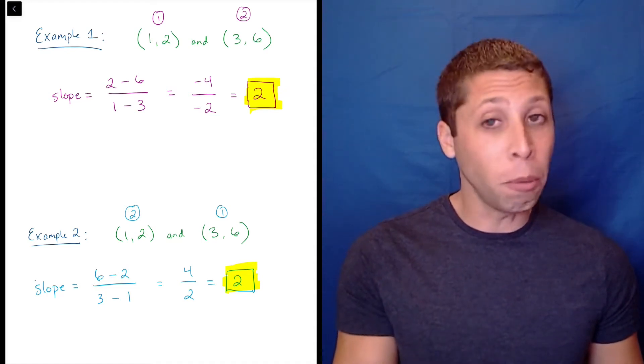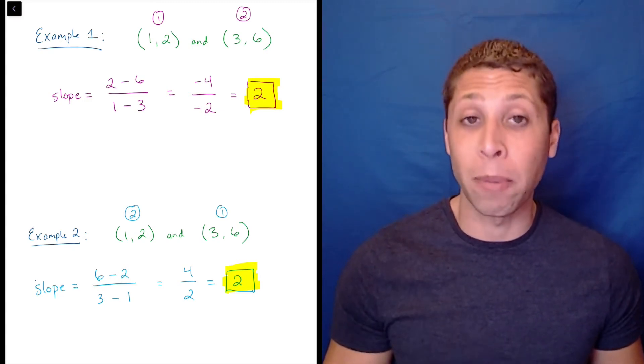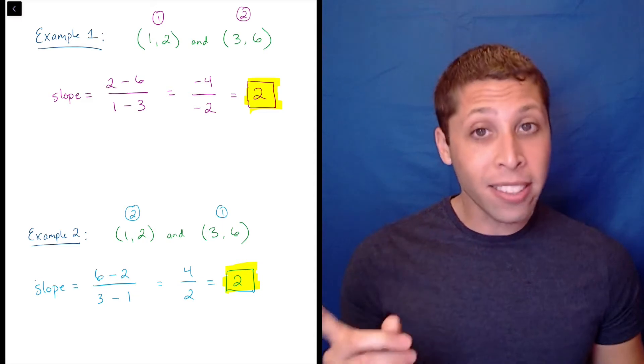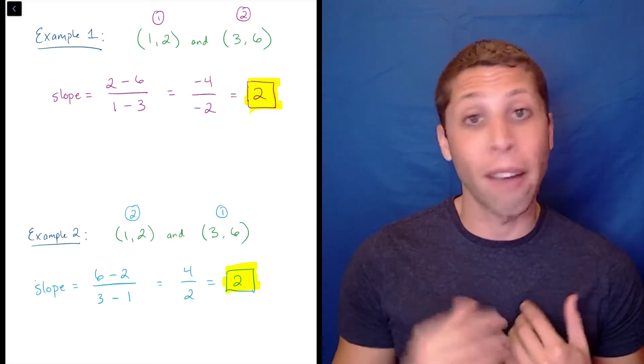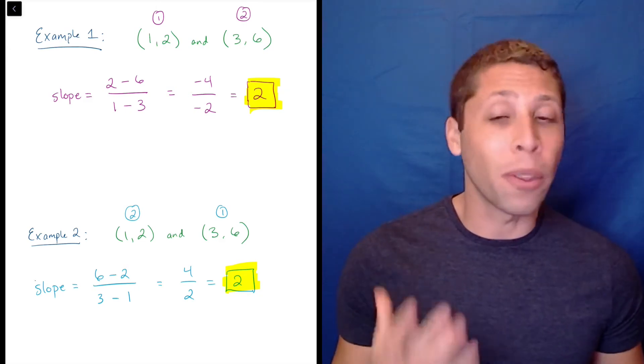But as you get more comfortable with the formula, you'll start to think ahead and choose the point that will make the arithmetic easier. In this case, I'd probably choose to have 3, 6 as my first point, so that I don't need to deal with negative numbers.